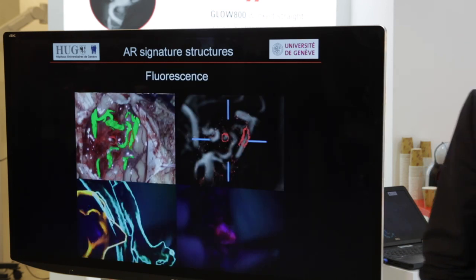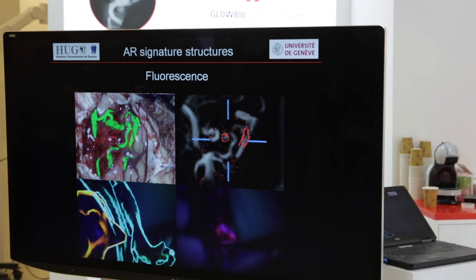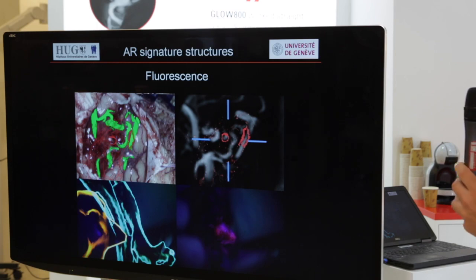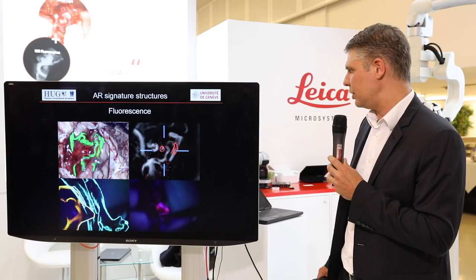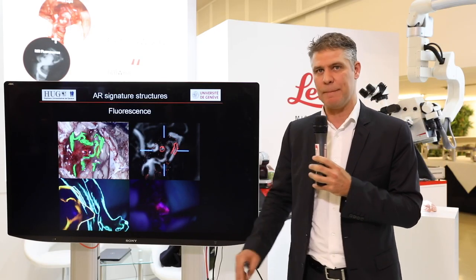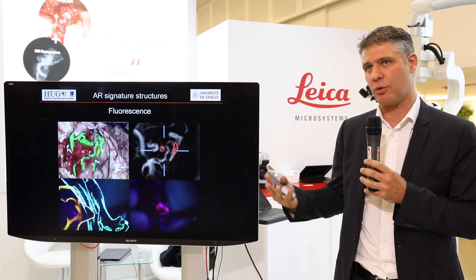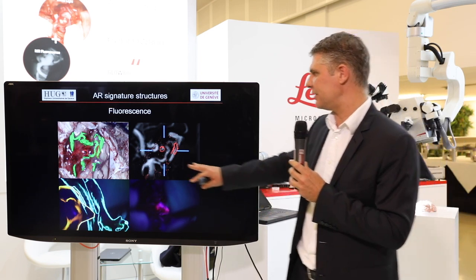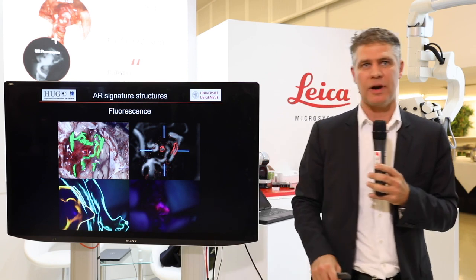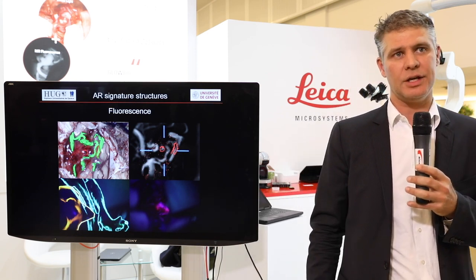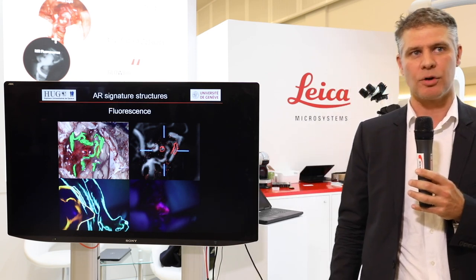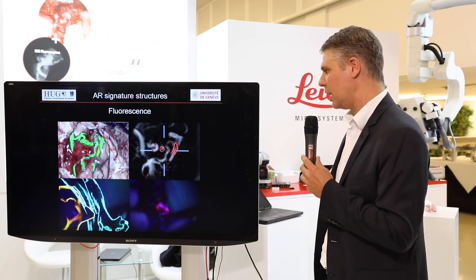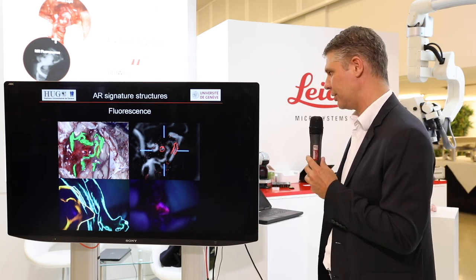This is an example of an AVM where you can see the vessels using GLOW 800. You can have here the MIP images acquired prior to the operation. The green and white overlap quite well. The idea is again to have a computer adjusting that — automatic tracking continuously during the operation.